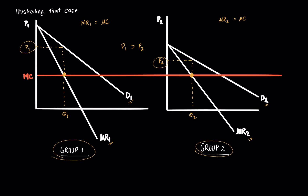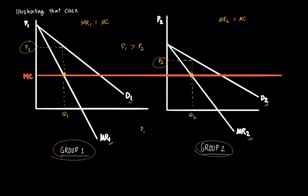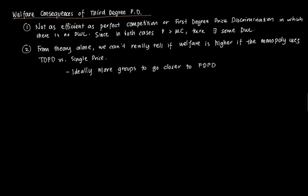There are two main welfare consequences of third degree price discrimination. The first is that it is certainly not as efficient from a societal standpoint as perfect competition or first degree price discrimination. In third degree price discrimination the price charged to any group is generally greater than marginal cost — both P1 and P2 are greater than MC. Because price exceeds marginal cost in both markets, there is some welfare loss in the form of deadweight loss in both markets.